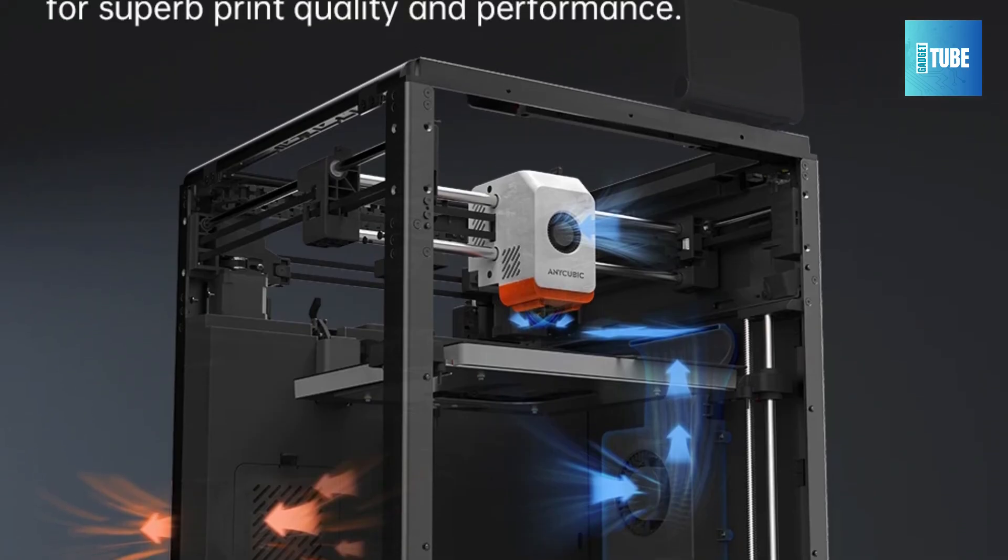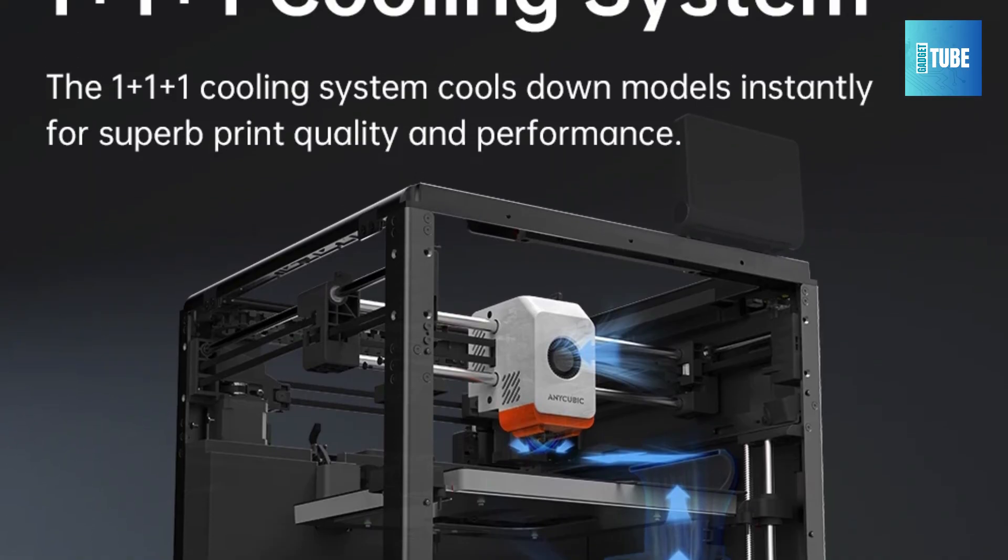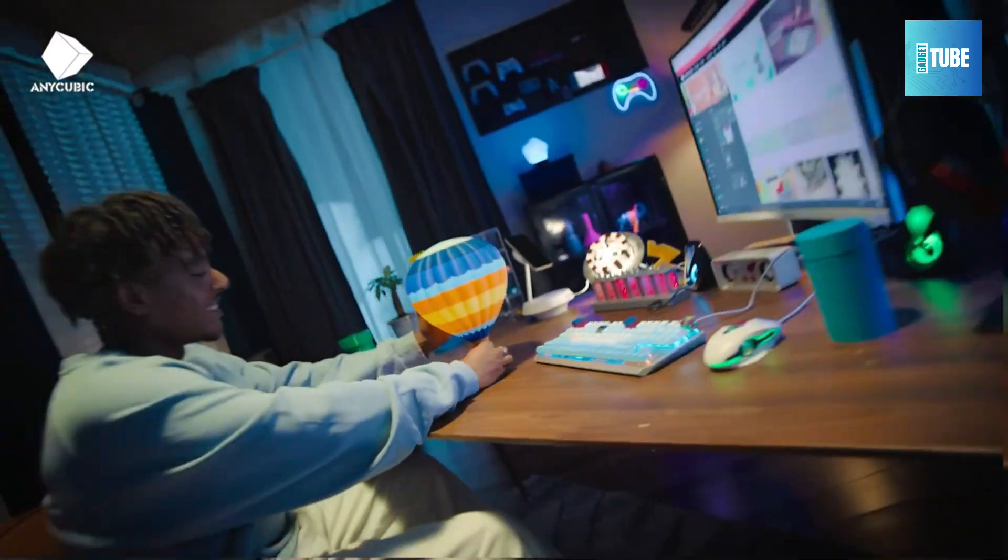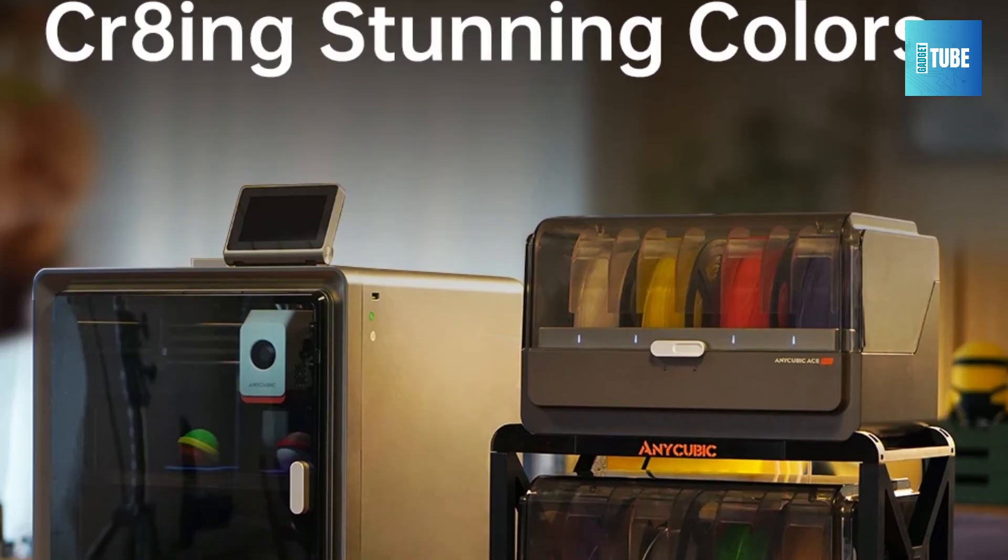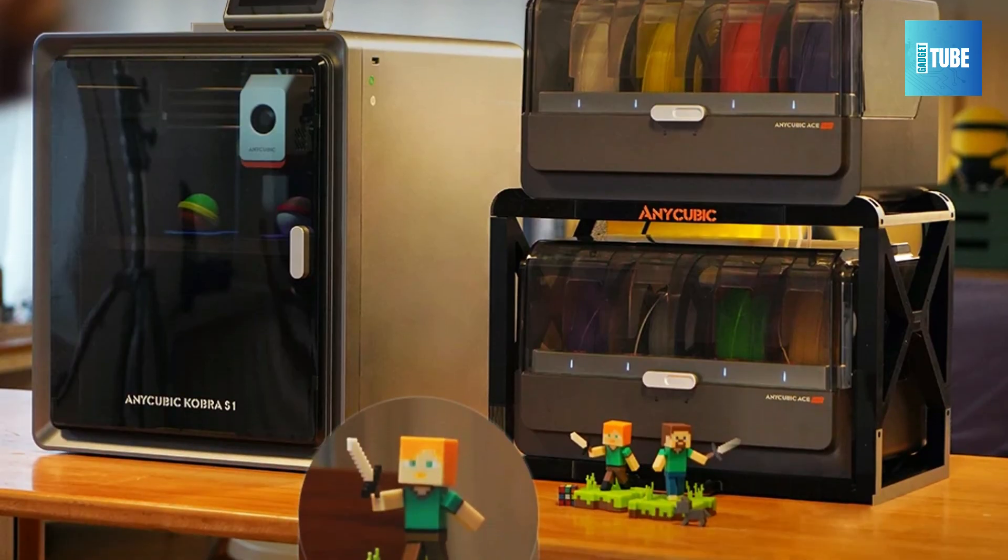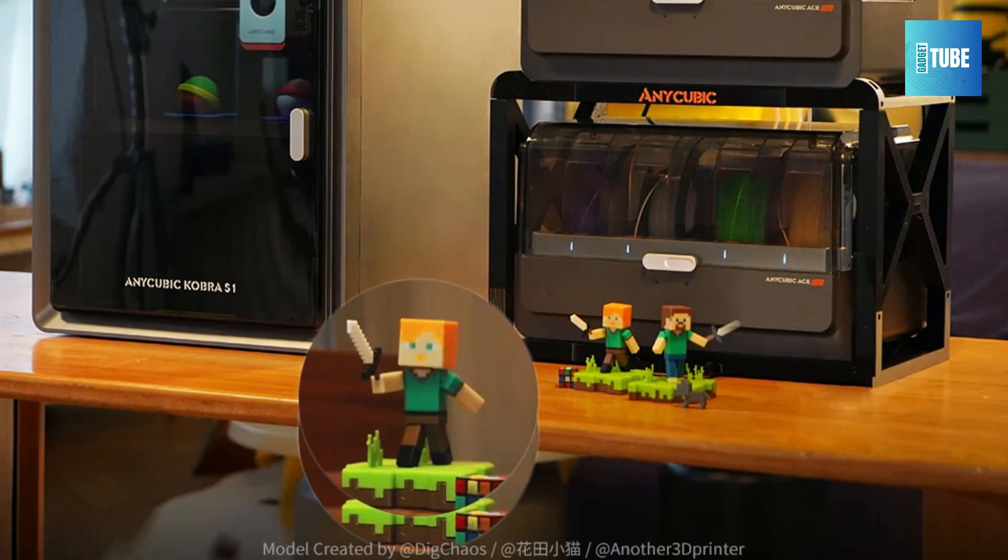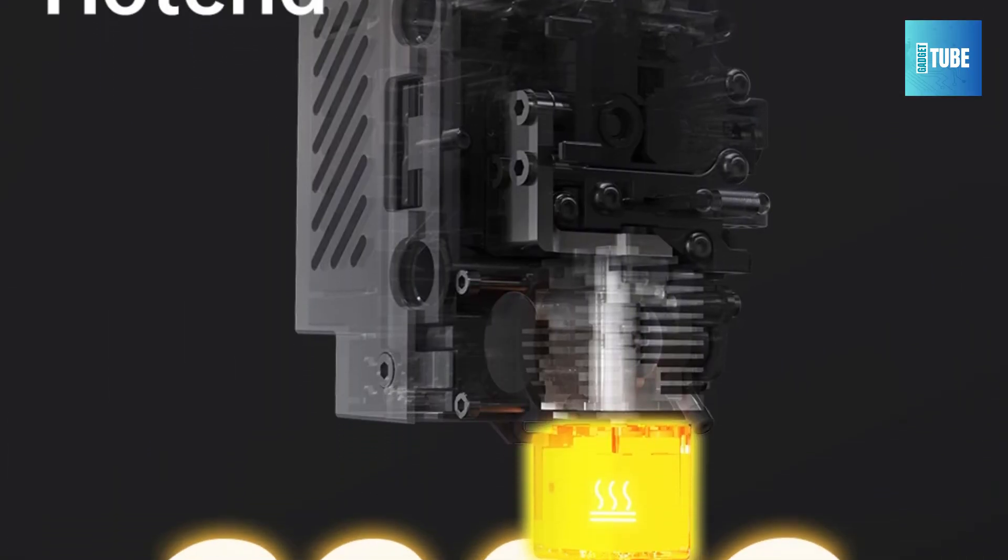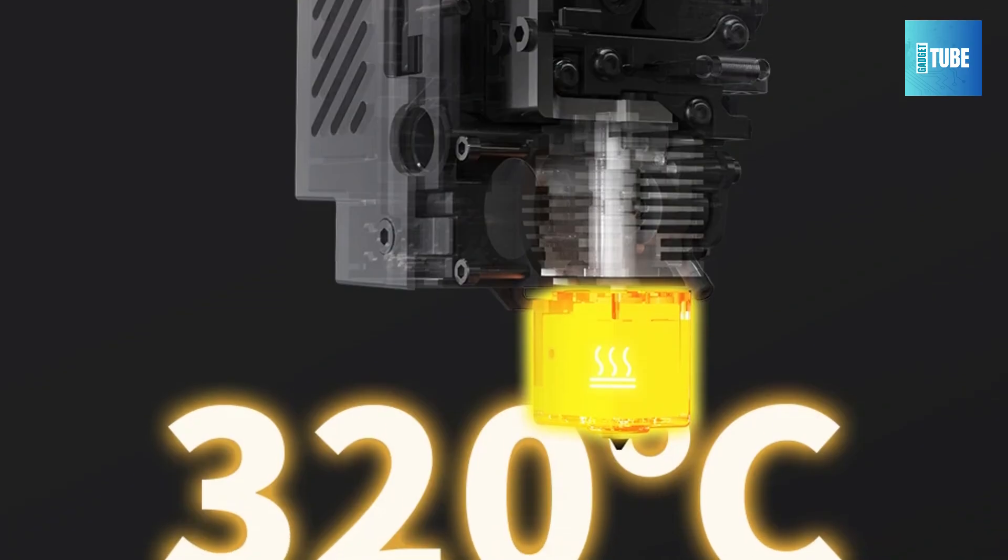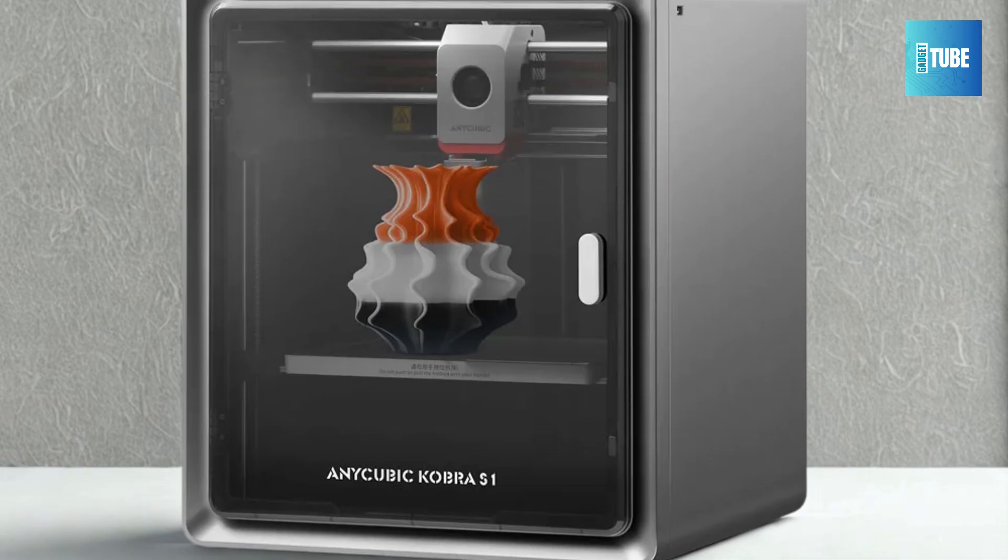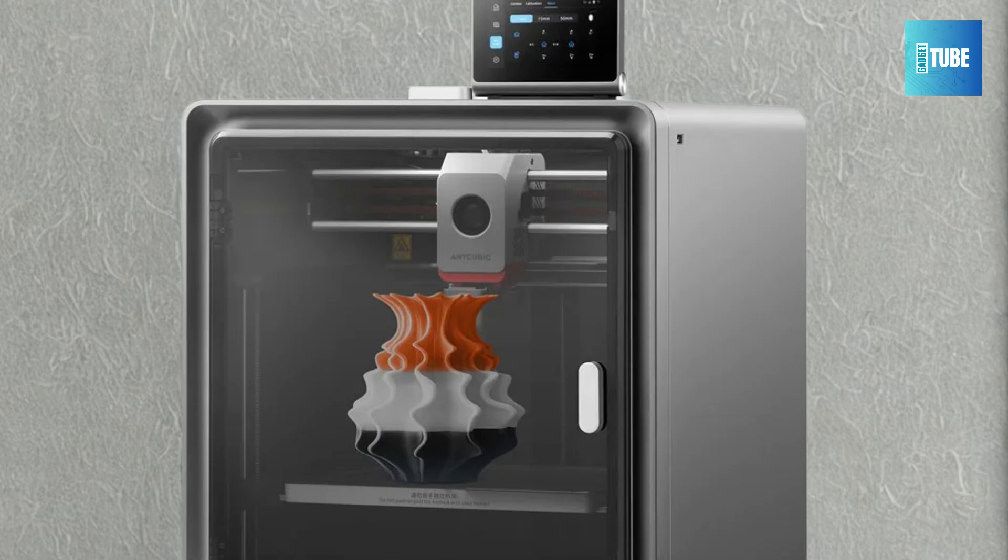The heated bed can reach 120 degrees Celsius, ideal for advanced materials and improving print adhesion. The generous build volume of 250x250x250mm suits most home and DIY creations. With a high precision of plus or minus 0.1mm and ultra-quiet operation, the Anycubic Cobra S1 perfectly balances performance and convenience for any enthusiast.